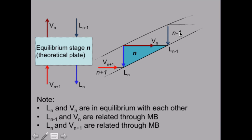And in this course, we start counting from above, so equilibrium stage 1 is the one at the top. The liquid fluxes go down from equilibrium stage n-1 to equilibrium stage n, and this one goes from equilibrium stage n to equilibrium stage n+1.